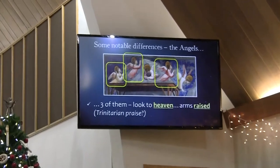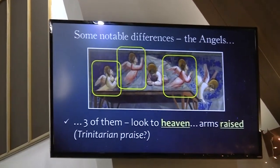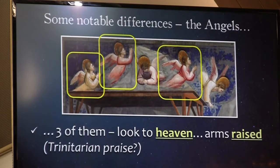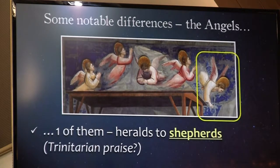Other notable differences tonight are the angels. Last week the angels were looking every which way — in fact, one was looking straight out at us and broke that two-dimensional plane by including us in the picture. Tonight, Giotto's angels are depicted in various ways. There are five of them. Three look to heaven with almost identical posture, raising their hands in praise — offering a Trinitarian form of praise to the Father, to the Son, to the Holy Spirit. On the right-hand side is one angel speaking to the shepherds, declaring to them the good news, with his right hand in the form of a Trinitarian blessing.